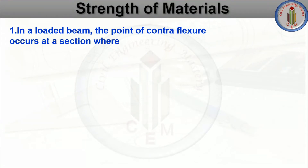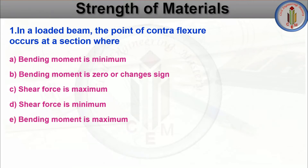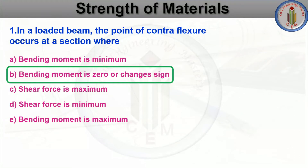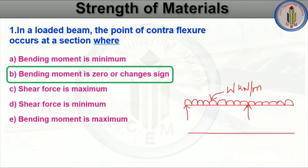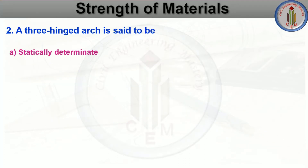Question number one: In a loaded beam, the point of contra flexure occurs at a section where — bending moment is minimum, bending moment is zero or changes sign, shear force is maximum, shear force is minimum, or bending moment is maximum. The answer is: bending moment is zero or changes sign. Consider an overhanging beam — drawing the bending moment diagram, the bending moment changes sign from positive to negative at that point. So this is called the point of contra flexure.